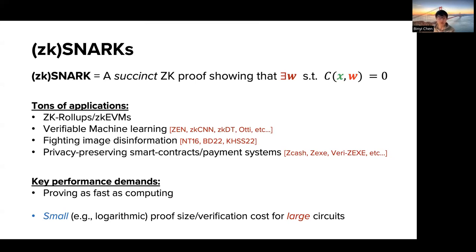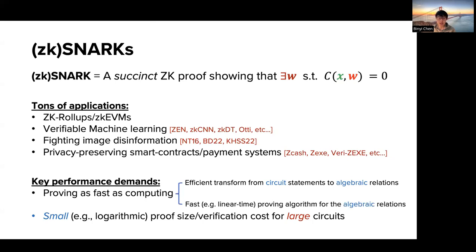In reality there is still a huge gap between proving and program execution. There are two ways to improve the state of the art. The first direction is about front ends — coming up with efficient transformations from high-level programs into algebraic relation statements like R1CS or Plonkish constraint systems, minimizing the number of constraints. The second direction is coming up with much faster proving algorithms for these algebraic relation statements, with the ultimate goal of linear proving time in the number of constraints.